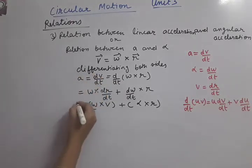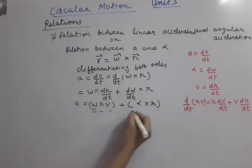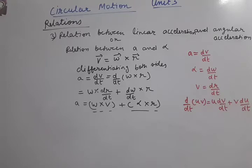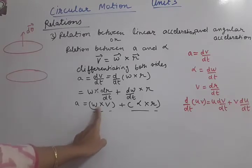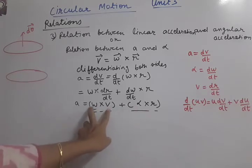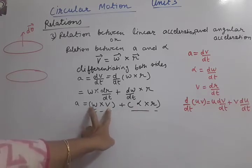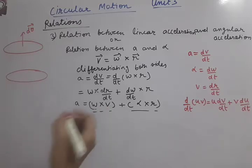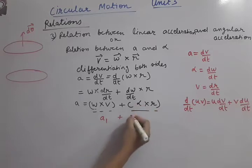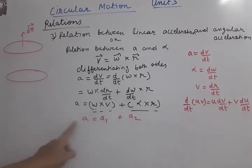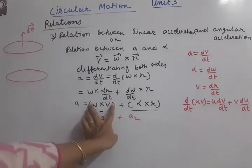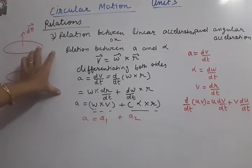So the answer for acceleration 'a' = dv/dt is the sum of two terms: (ω × v) and (α × r). We need to understand what these two terms mean - their directions and what type of accelerations they represent. Let us name them: a1 = ω × v and a2 = α × r, so total a = a1 + a2. We will use diagrams to understand their directions using the right-hand thumb rule.